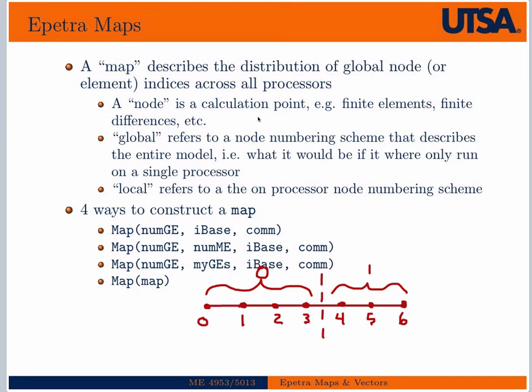Because we have an odd number, the distribution will not be quite even. Say we split and distributed some nodes to processor zero and the rest to processor one. Then you might have a local node numbering scheme that goes zero, one, two, three on processor zero, and zero, one, two on processor one. So the map on processor one goes four to zero, five to one, six to two — or vice versa.